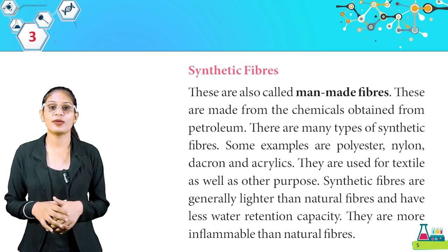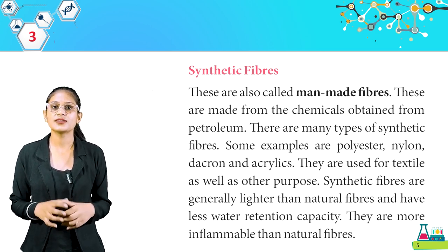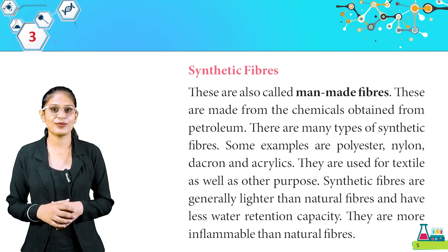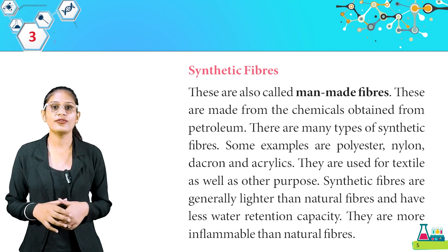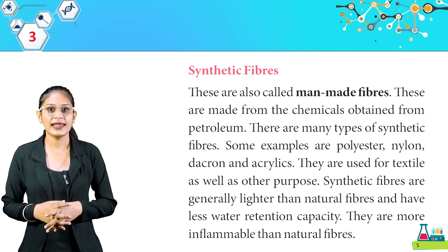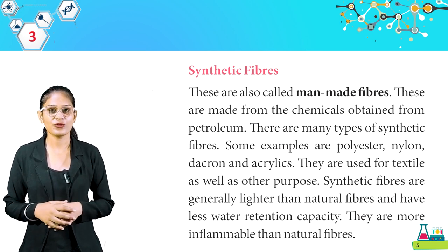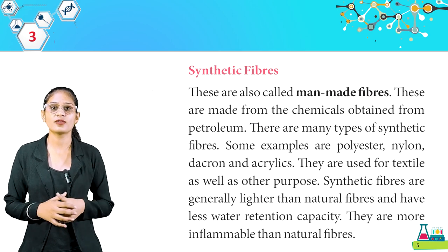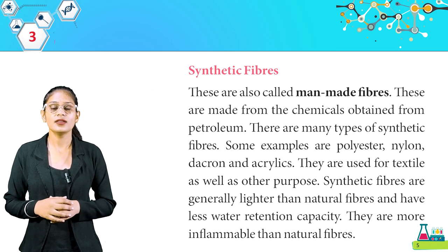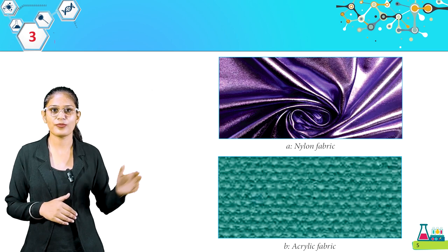Here is synthetic fibers. These are also called man-made fibers. They are made from chemicals obtained from petroleum. There are many types of synthetic fibers — some examples are polyester, nylon, dacron, and acrylics. These are used for textiles as well as other purposes. Synthetic fibers are generally lighter than natural fibers and have less water retention capacity. They are more flammable than natural fibers. Look at the pictures: nylon fabric and acrylic fabric.